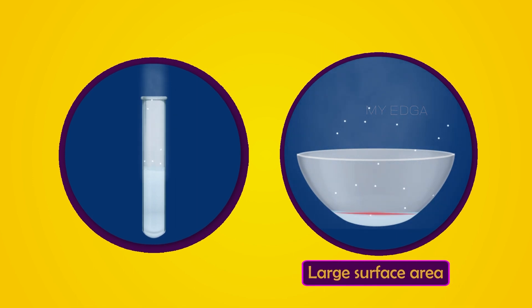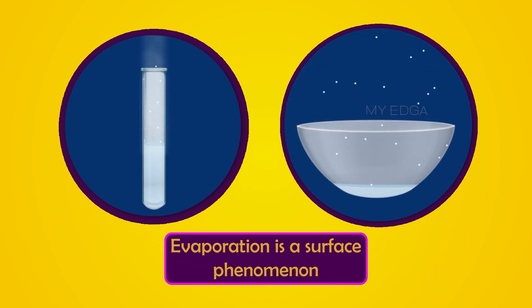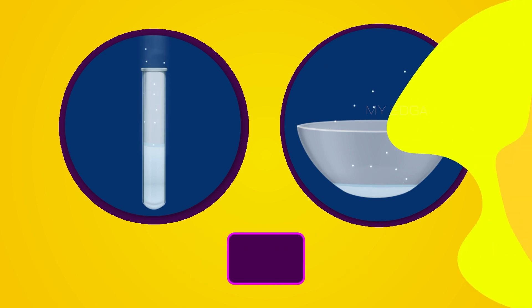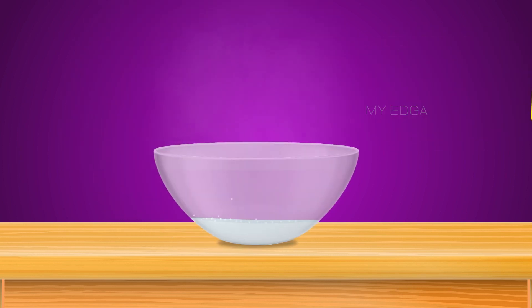This is because of the large open surface area of the china dish than the test tube. As you know, evaporation is a surface phenomenon. Water at the surface possesses higher kinetic energy, so they can easily break the bond between them and escape from the surface as vapor.